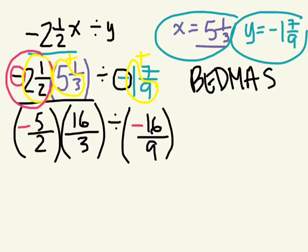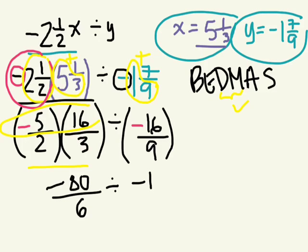Okay, so now we need to follow BEDMAS, order of operations, and we know that we need to multiply these two fractions. Okay, because we solve division and multiplication in the order it appears. Multiplication appears first. Negative 5 times positive 16. Negative 80. Negative 80. 2 times 3? 6. Good. Divided by negative 16 over 9.